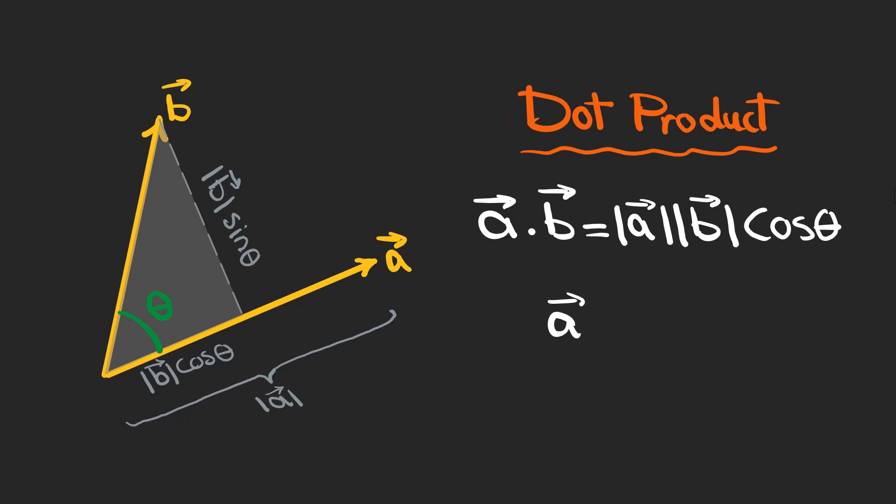By definition you can see that a dot b is equal to b dot a, because we can write a dot b as |a||b| cosine theta, or |b||a| cosine theta.